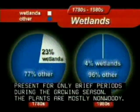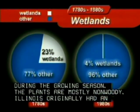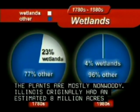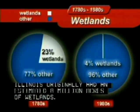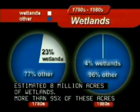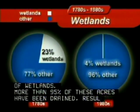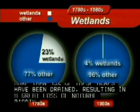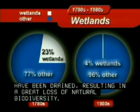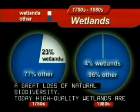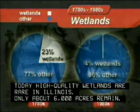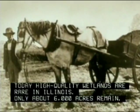Illinois originally had an estimated 8 million acres of wetlands. More than 95% of these acres have been drained, resulting in a great loss of natural biodiversity. Today, high-quality wetlands are rare in Illinois. Only about 6,000 acres remain.